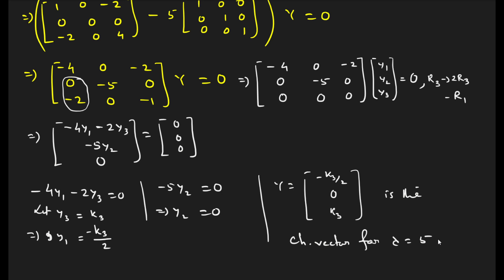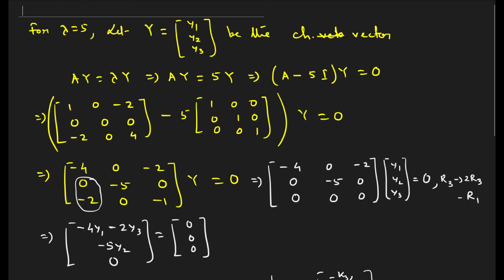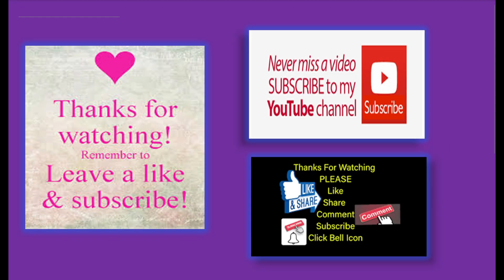This problem is complete. The process is simple: first find the characteristic equation, get the eigenvalues, then for each eigenvalue find the corresponding eigenvector. In this problem we had two distinct eigenvalues (0 and 5). If there were three distinct values, we would repeat the process for each. Please practice more problems on your own. If you like this video, kindly share it with your friends. Thank you very much for watching.